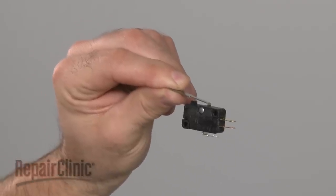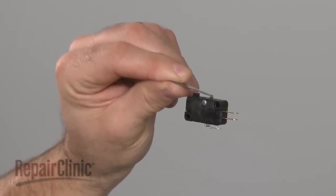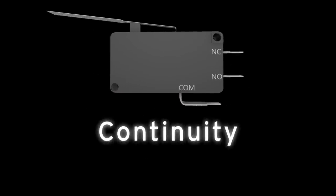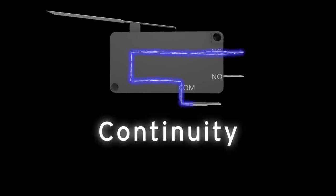Since you can't always tell if a range vent hood switch has failed simply by looking at it, you'll need to perform a continuity test. A continuity test will determine if a continuous electrical path is present in the switch.